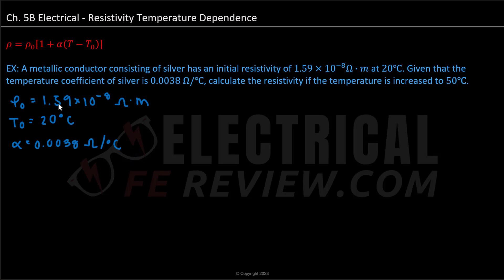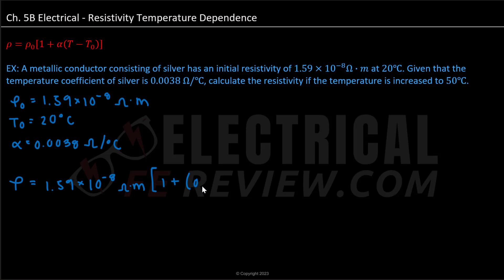We can now go ahead and start to plug in these values into our formula to solve. Rho is equal to rho naught — so 1.59 times 10 to the negative eight ohms times meters — and we add a bracket: 1 plus alpha, which is 0.0038 ohms divided by Celsius.